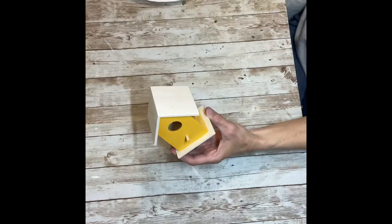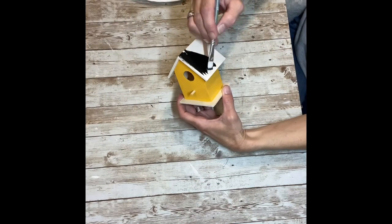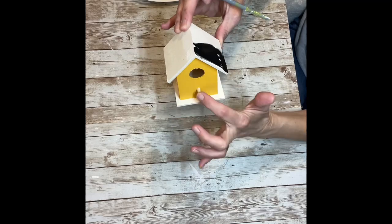Once I have it all painted yellow, I'm going to take the black paint and paint the roof and the base and the little perch that the bird sits on.